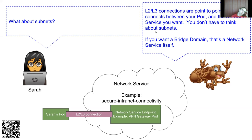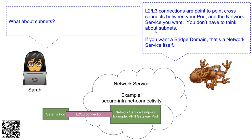On subnets: Network Service Mesh deals with L2/L3 connections that are point-to-point cross connects between your pod and the network service you want, so you don't really have to think about subnets. If you want a bridge domain, that bridge domain itself is a network service — NSM just connects you to it. By virtue of being point-to-point cross connects, we don't have the same crazy subnet issues. Q: Is this applicable to Windows pods? It could be — I don't talk about it because I'm relatively ignorant there, and we'd welcome someone to help ensure we leave the right architectural white space.